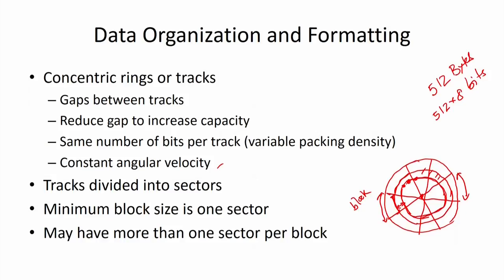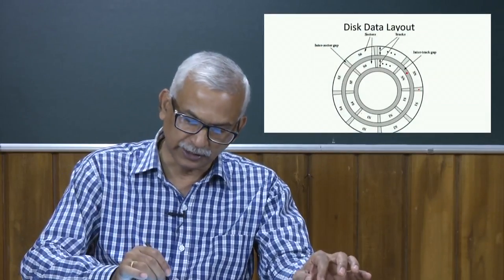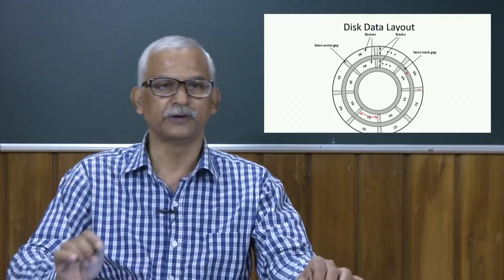Here is the diagram of the disk organization. We have inter-track gaps, inter-sector gaps, and different tracks. Tracks are divided into different sectors: sector 1, sector 2, sector 3, and so on up to sector N. This is track 1, track 2, and we have several tracks. Data is organized and stored in this particular sector-based way.